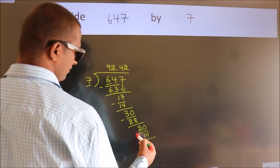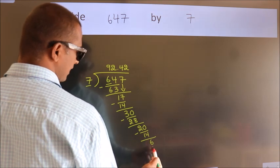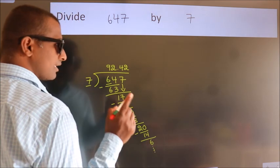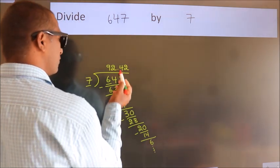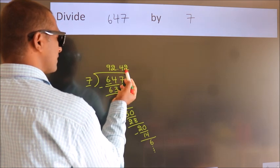Now we subtract. We get 6. And the division continues. It is enough if we do up to 2 decimal places.